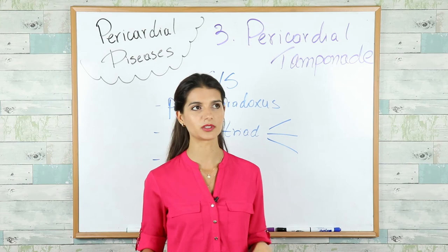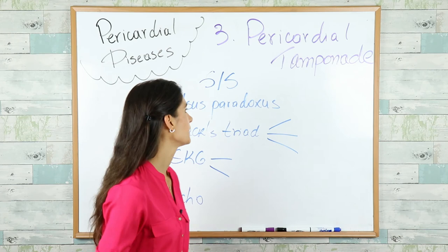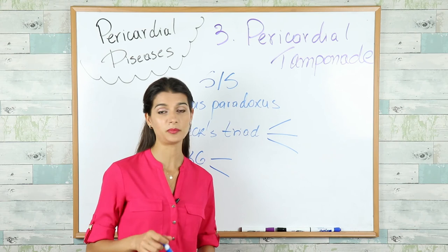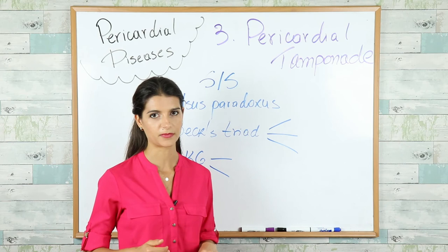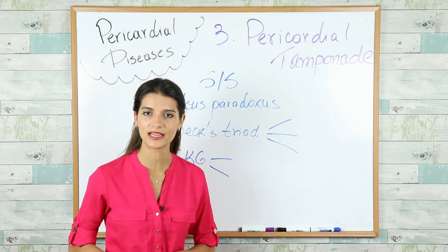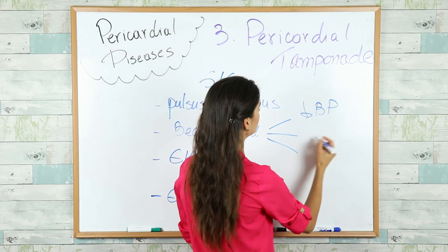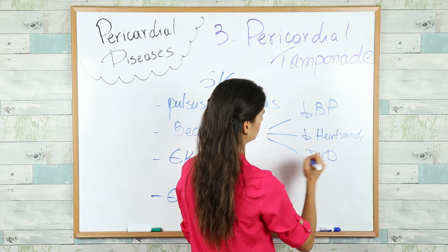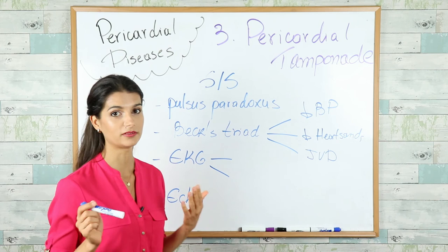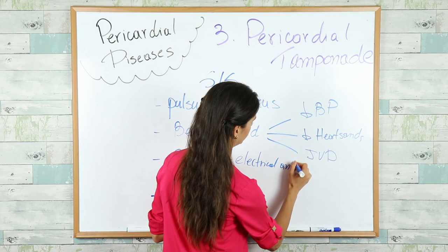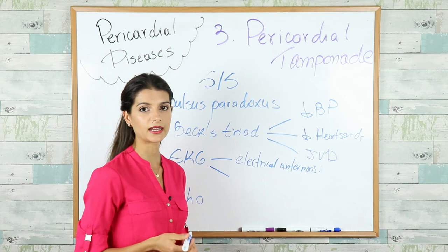A patient with pericardial tamponade presents with pulsus paradoxus — a drop in systolic blood pressure of more than 10 mmHg on inspiration. Note that pulsus paradoxus can also be seen in constrictive pericarditis. You'll also see the famous Beck's triad: hypotension, distant or decreased heart sounds, and JVD. On EKG, you'll find electrical alternans — different heights of the QRS complex across different leads — which is pathognomonic of pericardial tamponade.